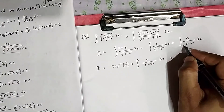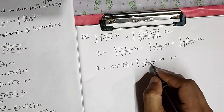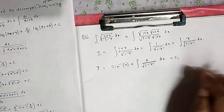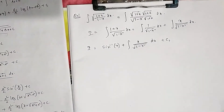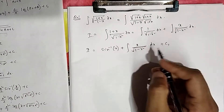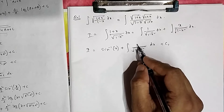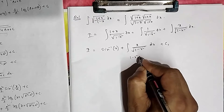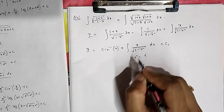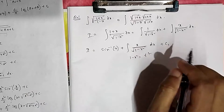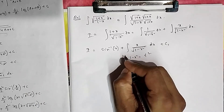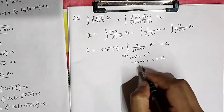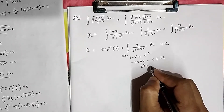For the second integral, since there is a root, take 1 − x² = t². Differentiating: −2x dx = −2t dt, so x dx = −t dt. Just focus on the algebraic portion — 2 cancels out and you get x dx = −t dt, which you will substitute in.